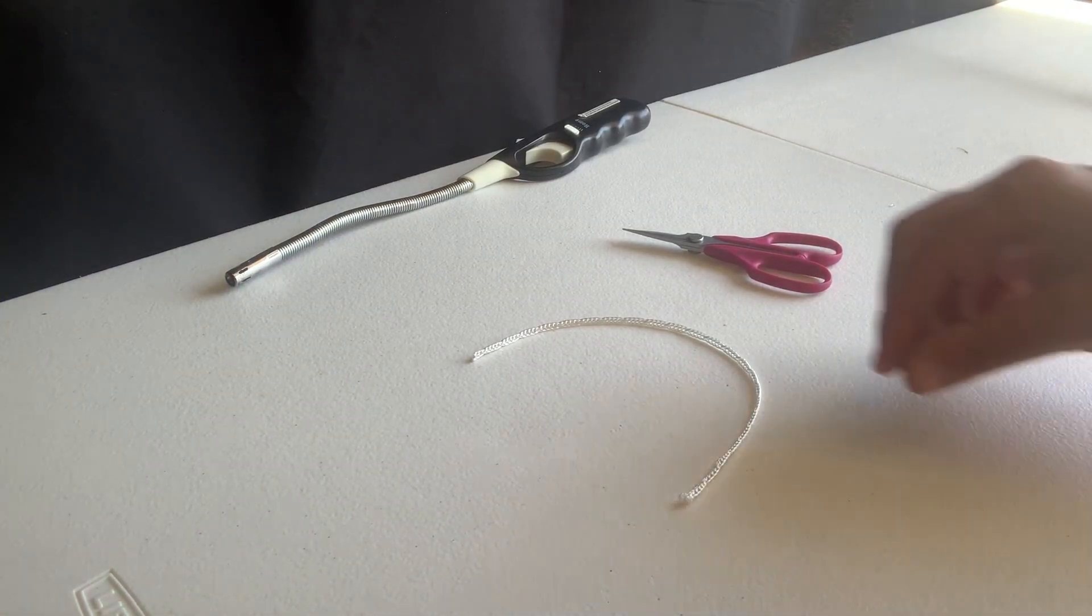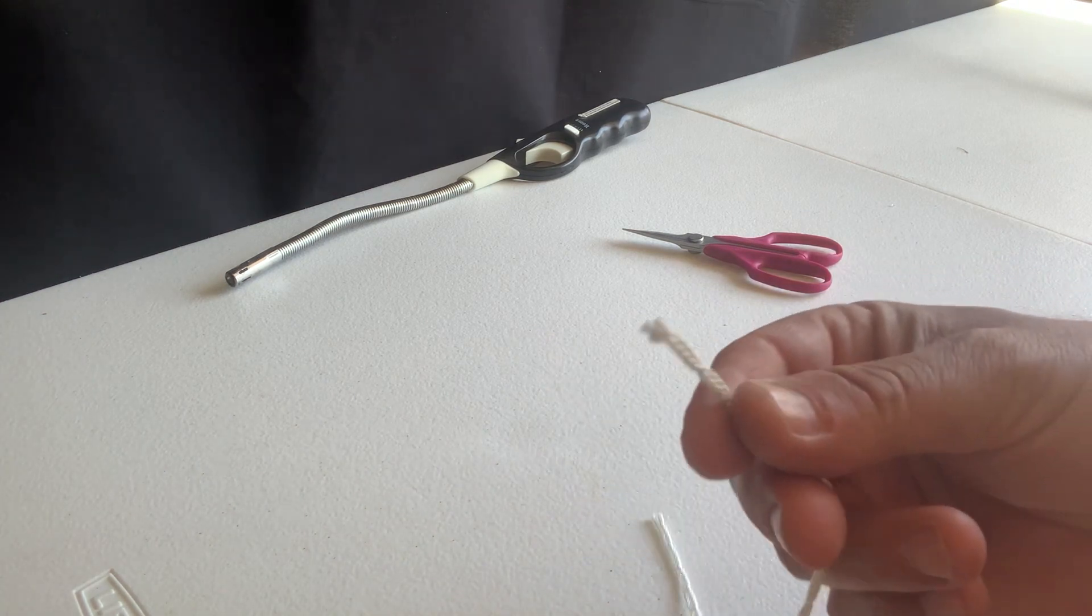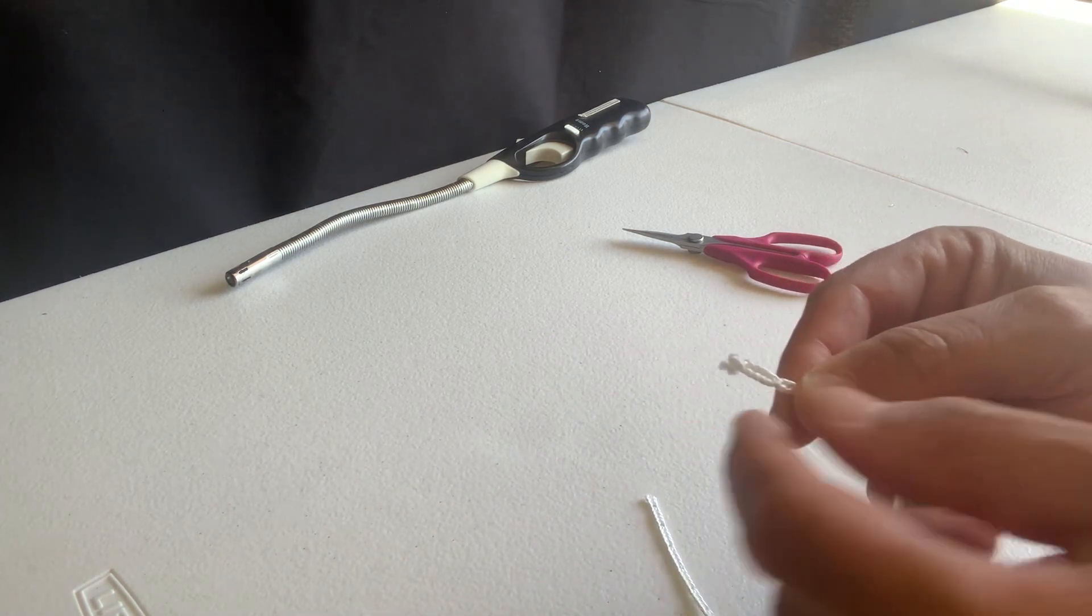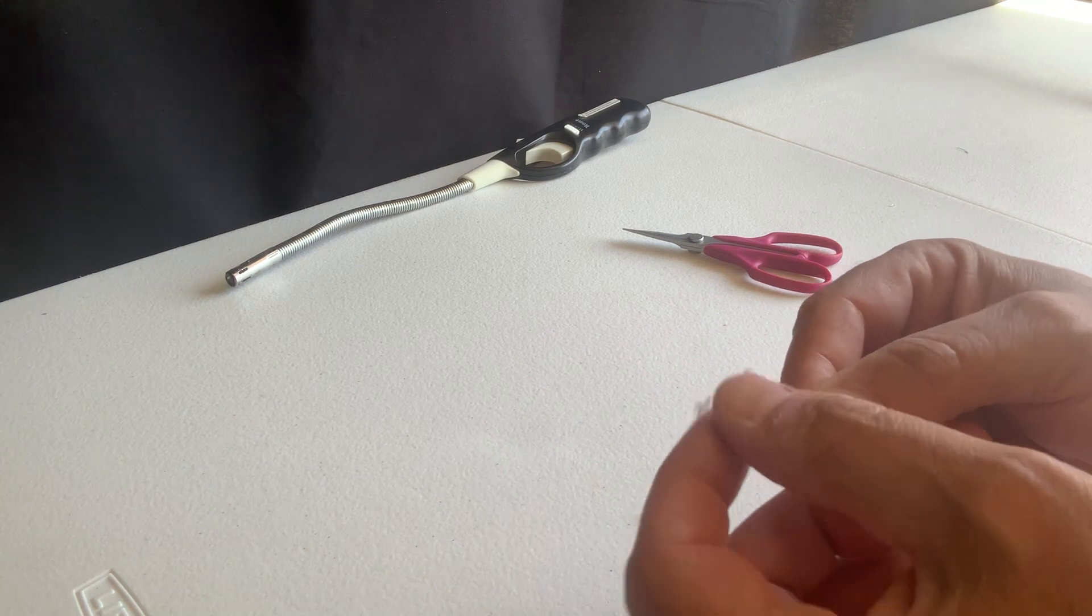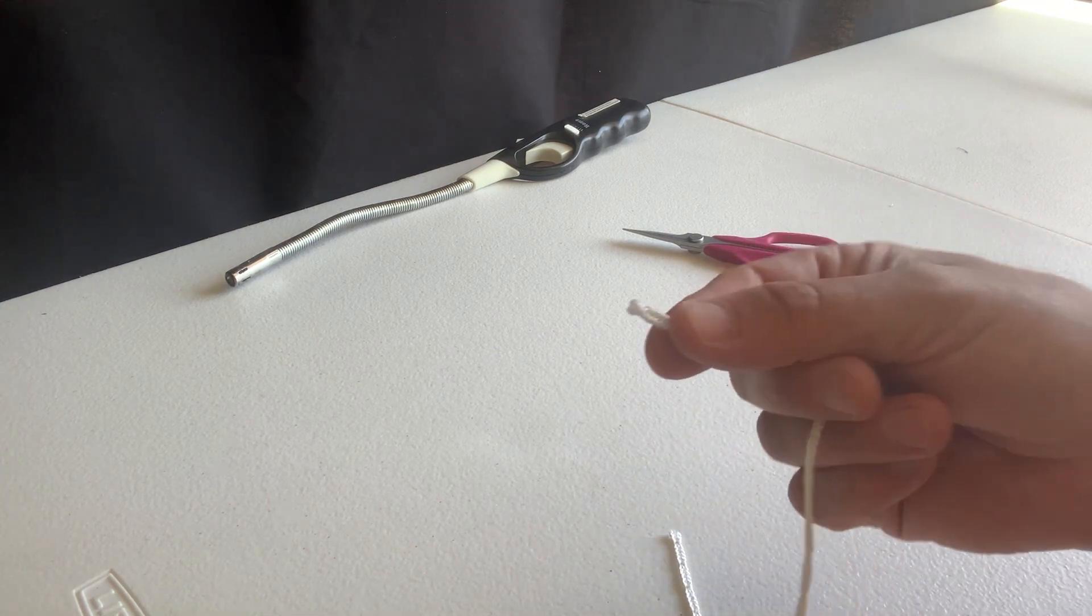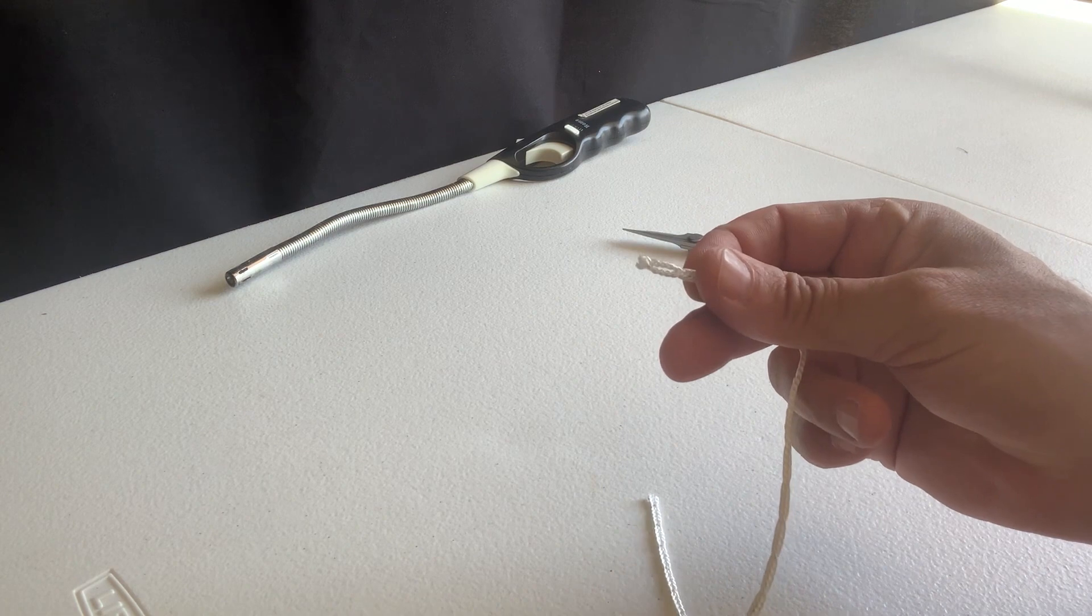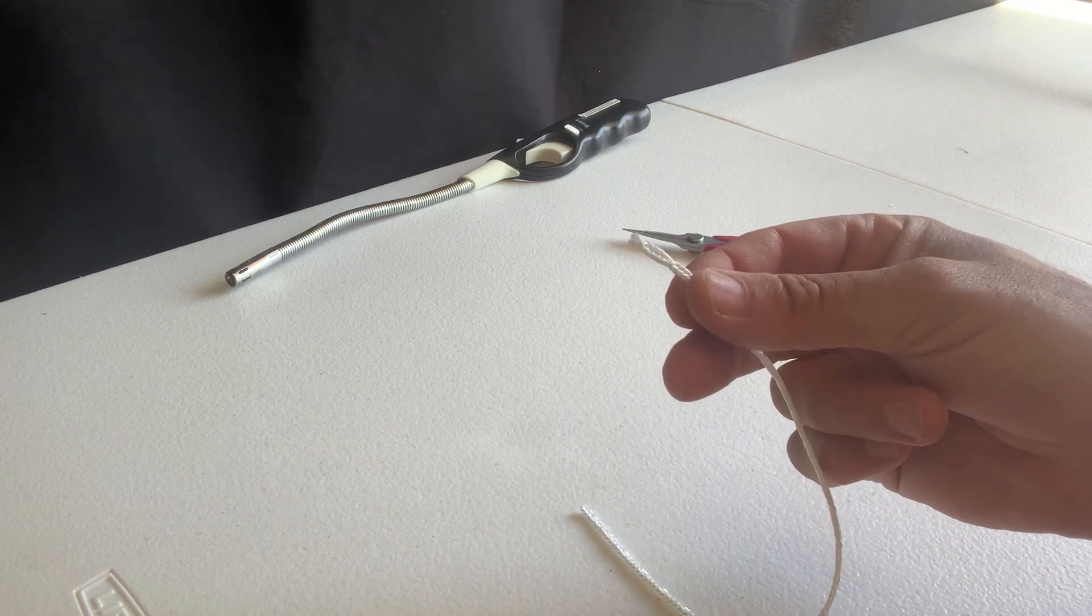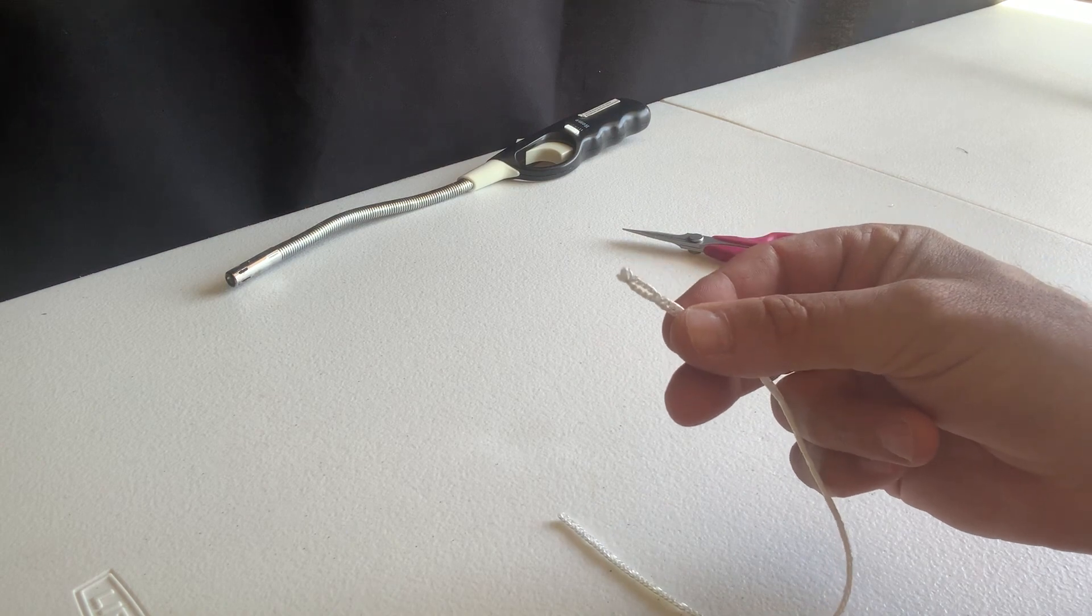When cutting tech solve cord, the end can fray as it has. You can see that little fuzz coming off, the end is fraying, and in order to prevent that from unraveling when you're using the cord, you need to singe the end.